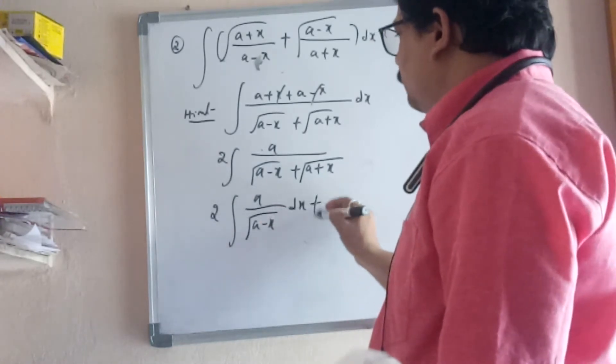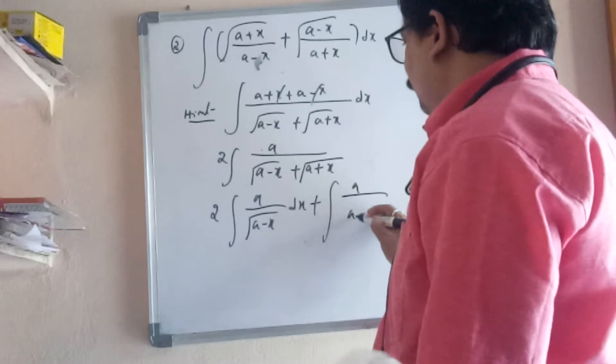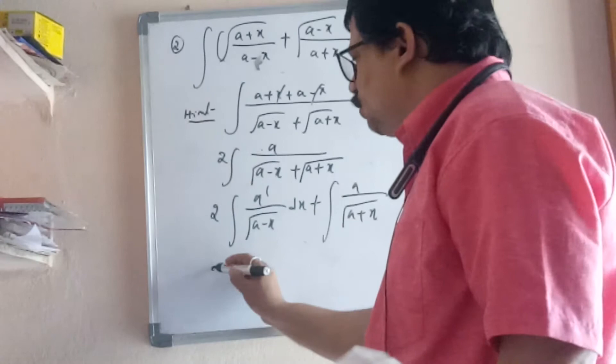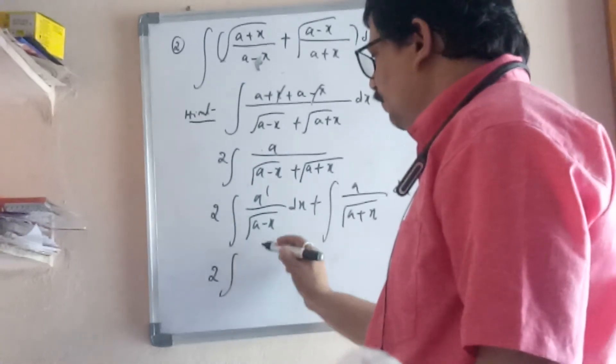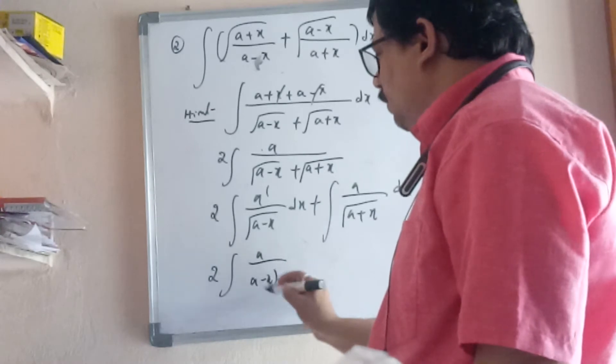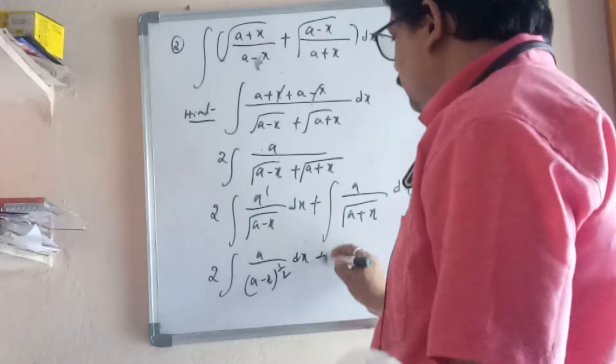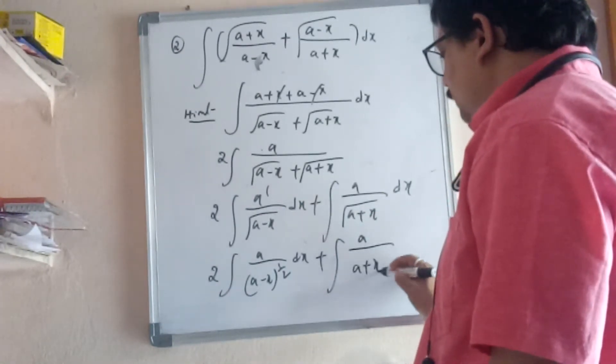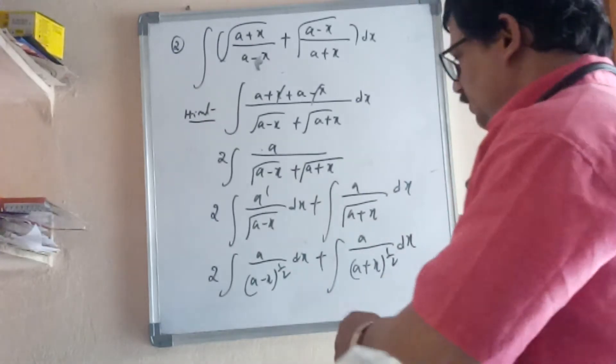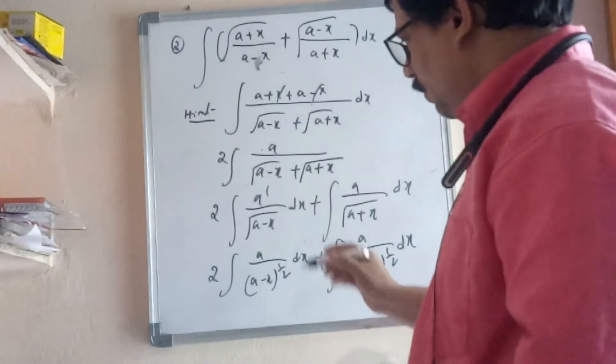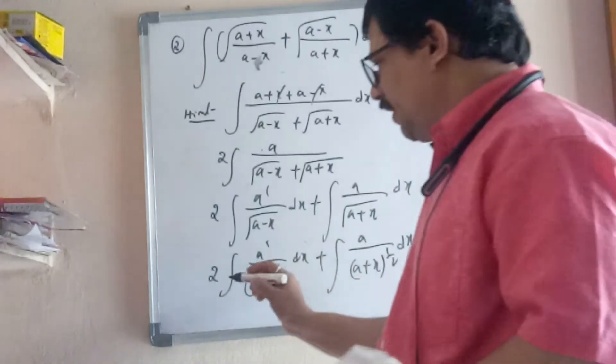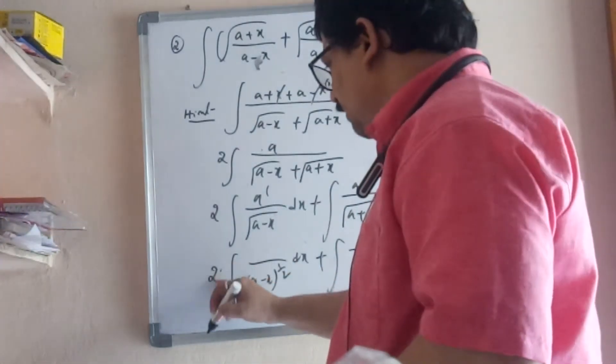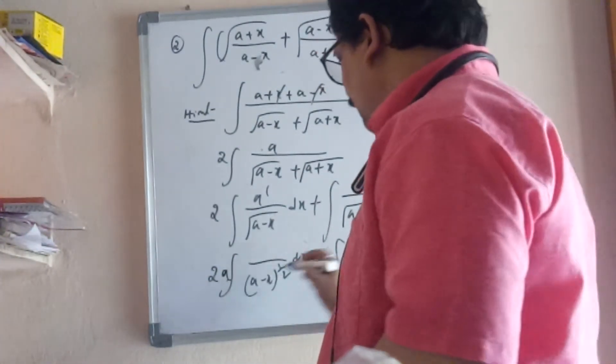Now integral of 2a/√(a²-x²) dx. Take a common from both terms: a√(a-x) and a√(a+x). Here a common, here also a common.